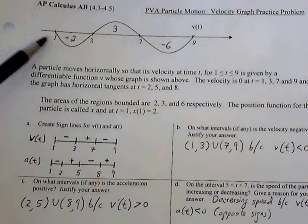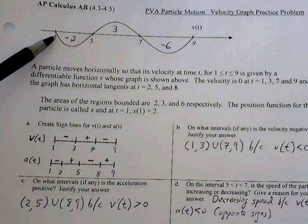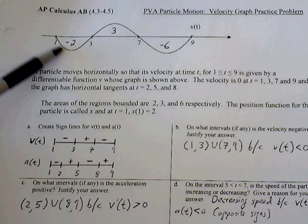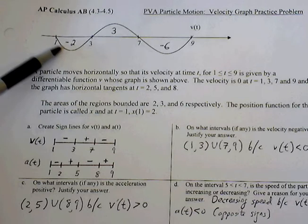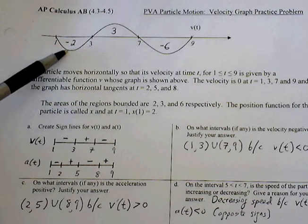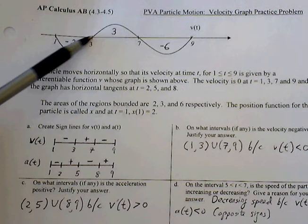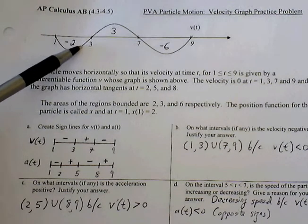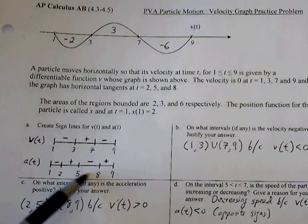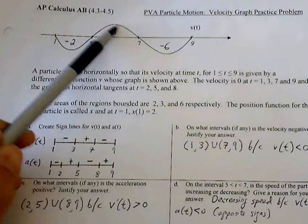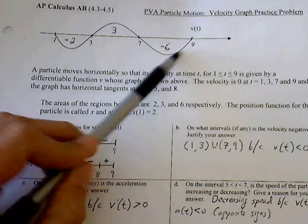Acceleration is where the slope of my velocity is either positive or negative. In this region, the slope is becoming more negative, so I have negative acceleration here from 1 to 2. From 2 to 5, my velocity is becoming more positive, so acceleration is positive here. From 5 to 8, negative acceleration. And then from 8 to 9, positive acceleration.